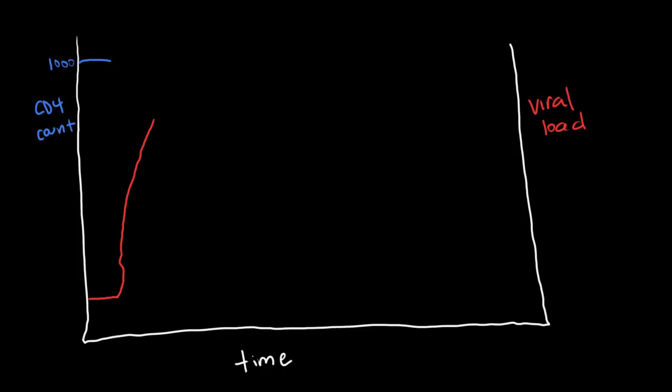And that will keep going until the body is able to mount an immune response. And that will bring the viral levels down, but not all the way down to zero. Then at the same time, CD4 levels will decrease very rapidly. And then when the immune system kicks in, that will bring the CD4 levels back up again, but again, not all the way up to normal. This part is called the acute phase and it lasts for several weeks.